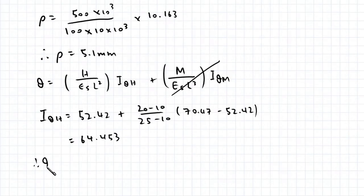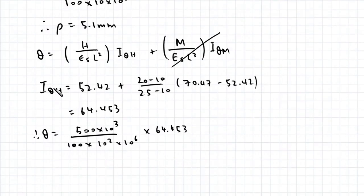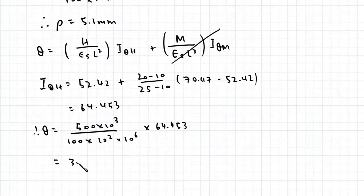Therefore, theta is equal to 500 times 10 to the power of 3 divided by 100 times 10 squared times 10 to the power of 6, multiplied by 64.453. This works out to be 3.223 times 10 to the power of negative 3 in radians, which equals 0.185 degrees.